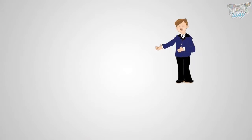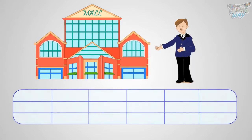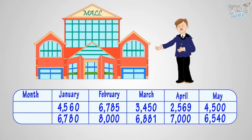Mr. Joe owns a mall. He recorded the number of people visiting his mall in the past five months, in morning and evening.